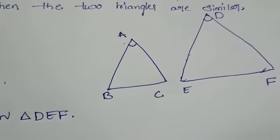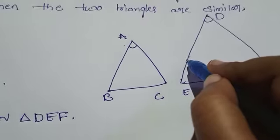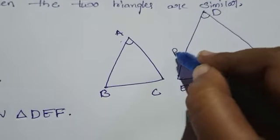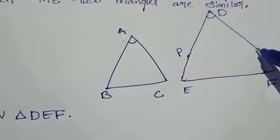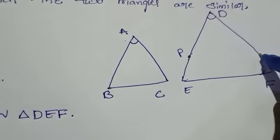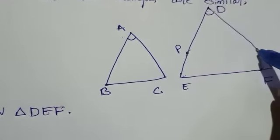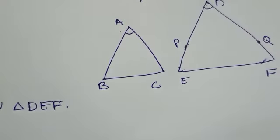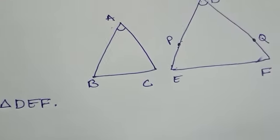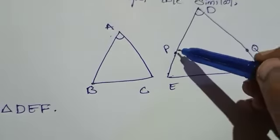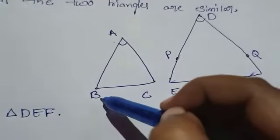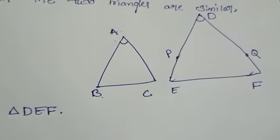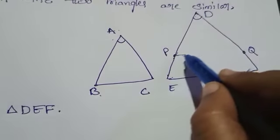Construction: Mark a point P on DE and a point Q on DF, such that DP is exactly equal to AB and DQ is equal to AC. Then join PQ.